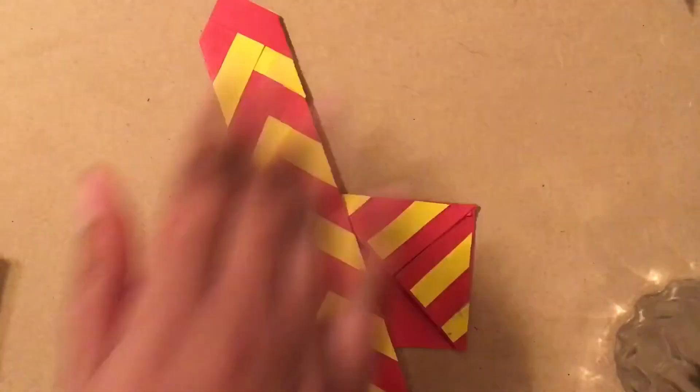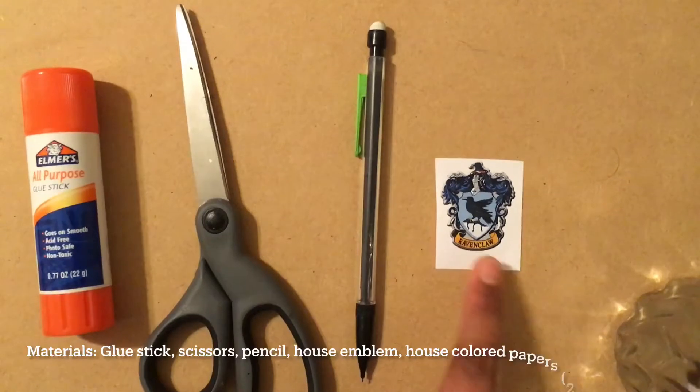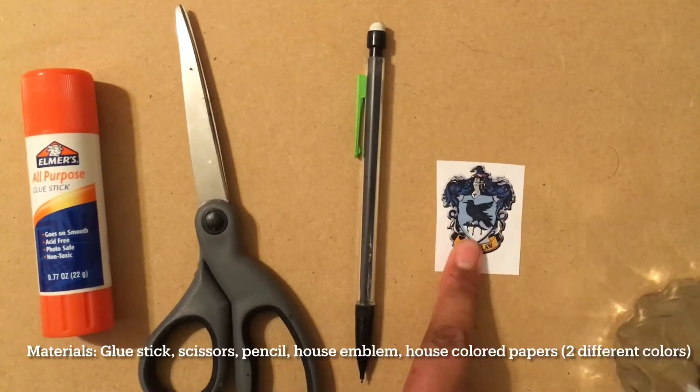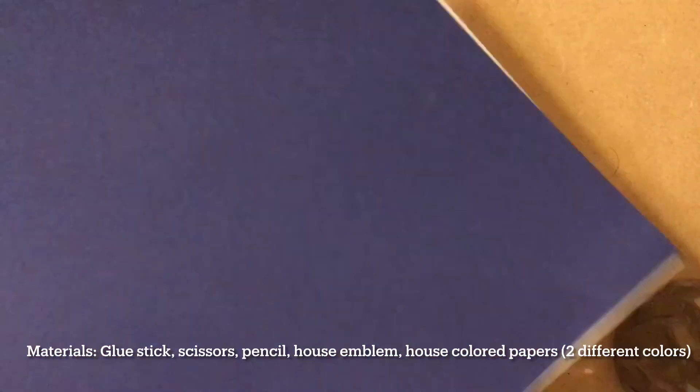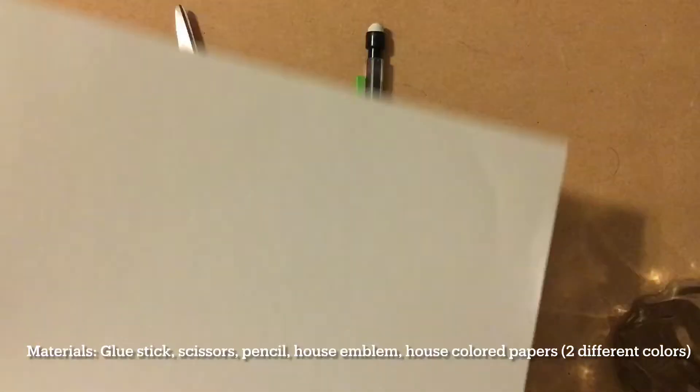So let's get started. You're going to be needing a glue stick, scissors, a pencil, and the house emblem—you don't need to add this but I wanted to. You're also going to be needing the house color papers. I'm using blue and grey. We're going to start off this project by using any straight edge you can find.